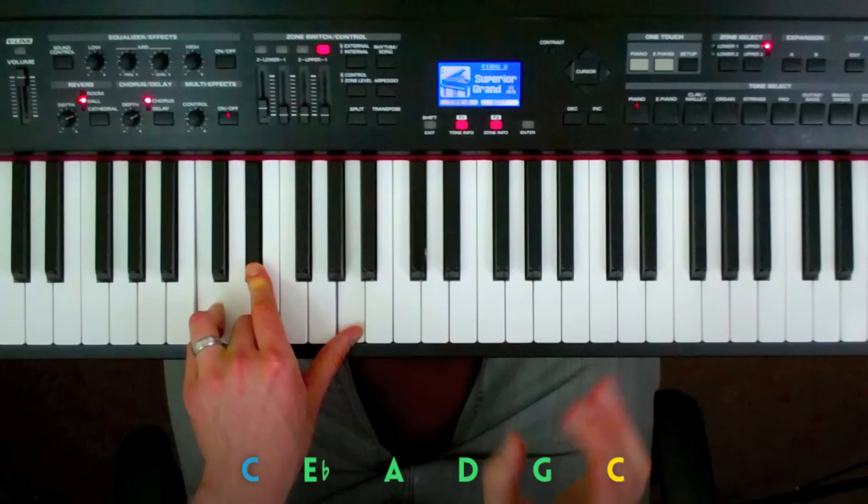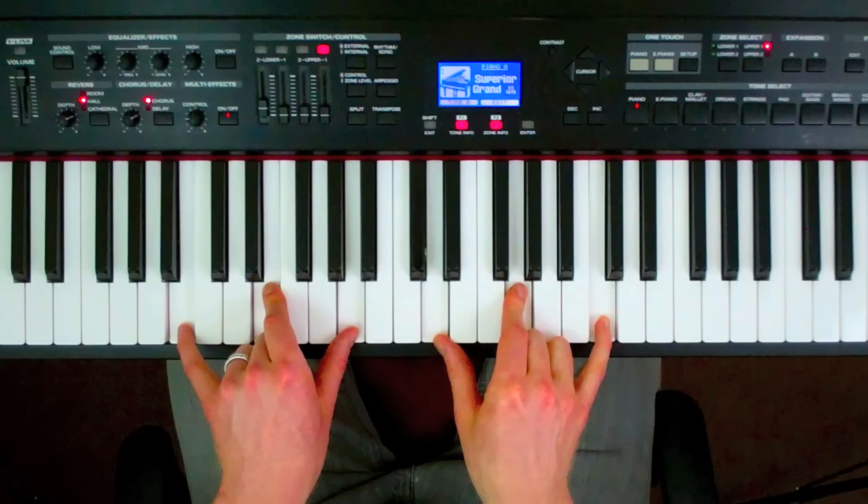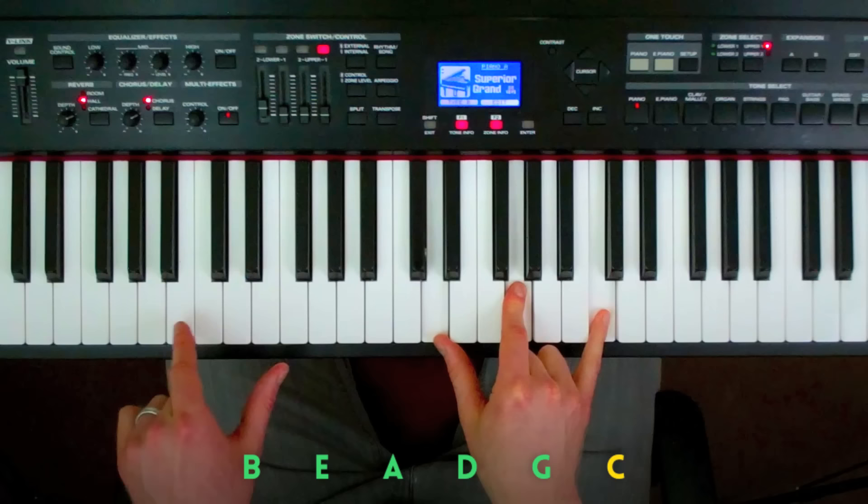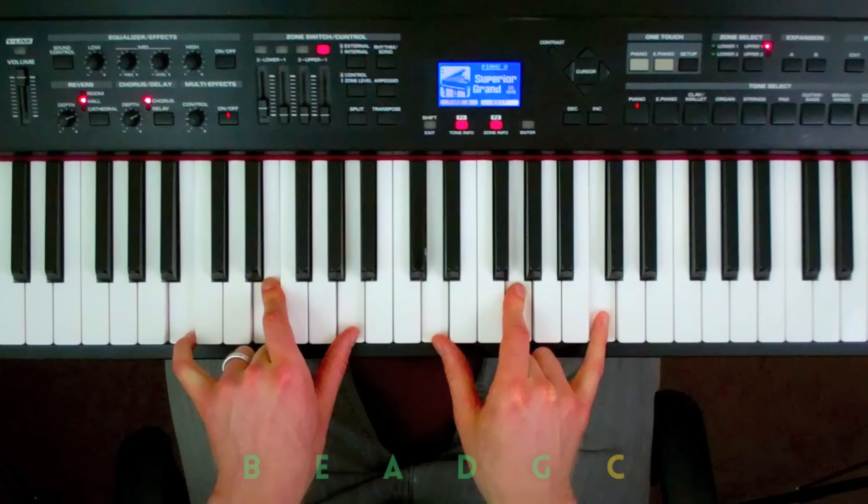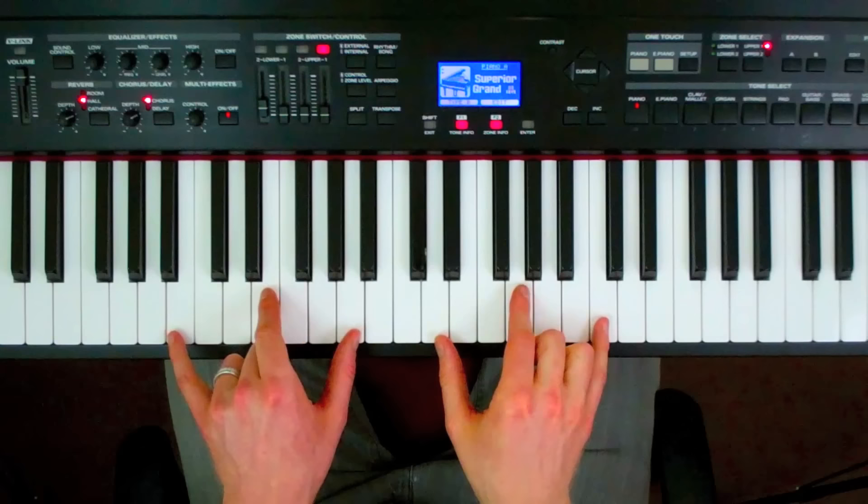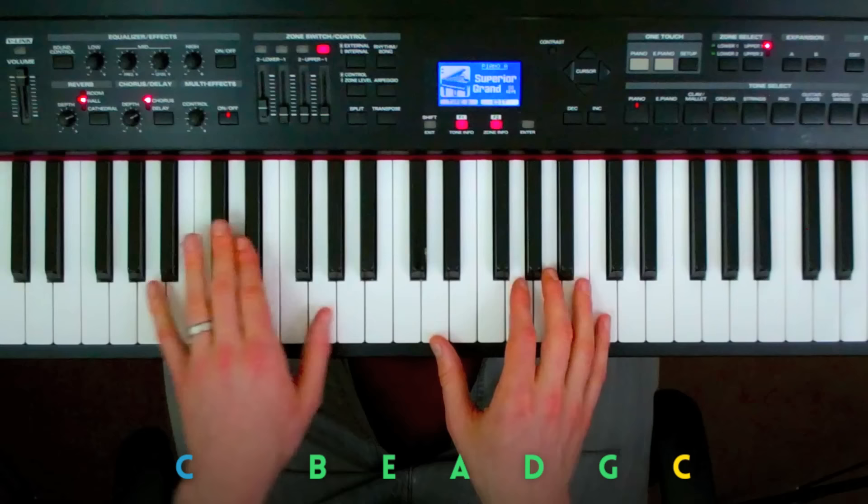However, some of these chord voicings don't have the root as their bottom note. This voicing for C major 7 for example does not have C as its lowest note. So how do I play the bass note, I want a C in my bass line, and the chord voicing? Well, I do pretty much what I just did, I hold down the root of the chord with the pedal and then I jump up and play the rest of the voicing as well as the melody note.